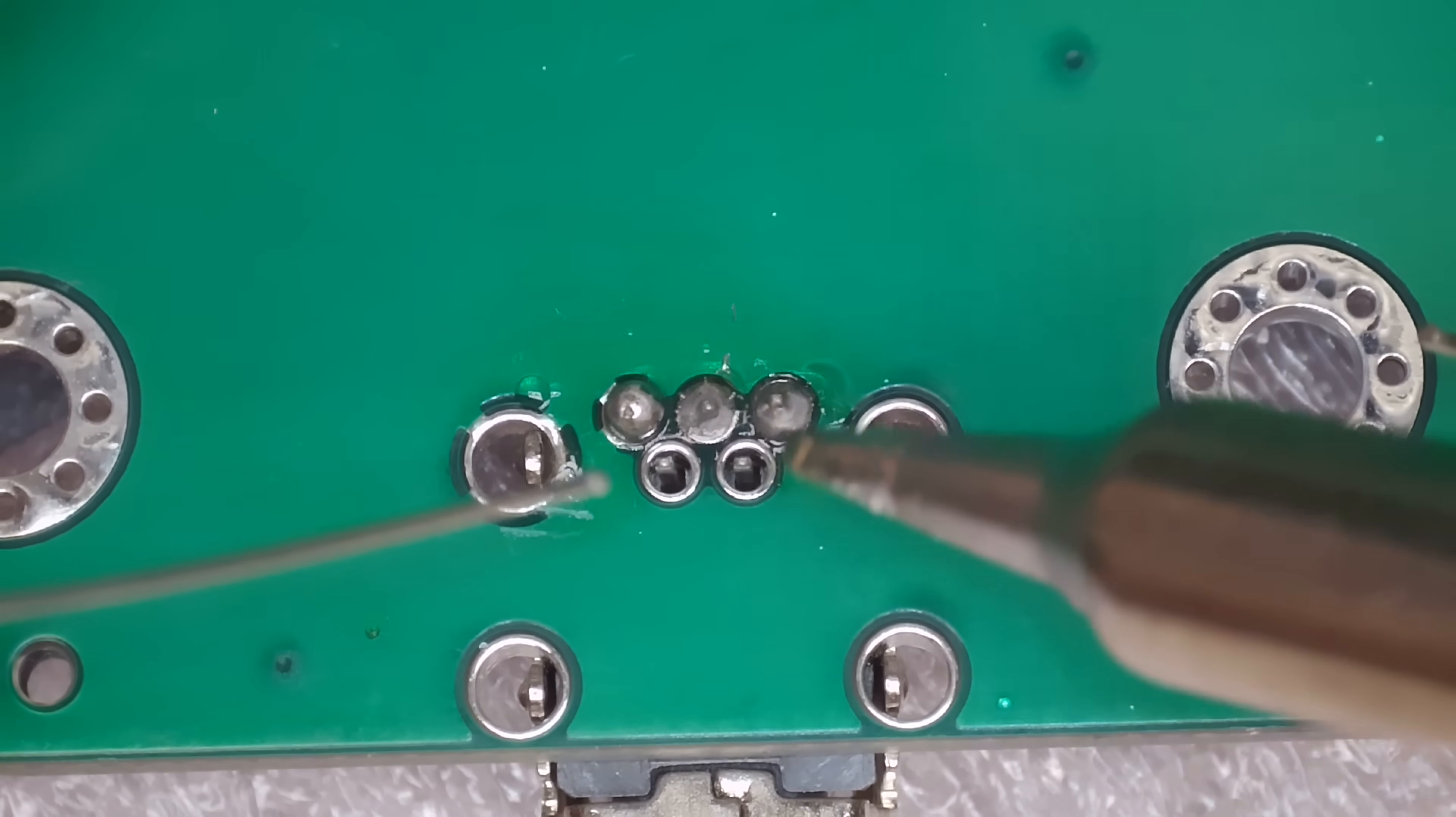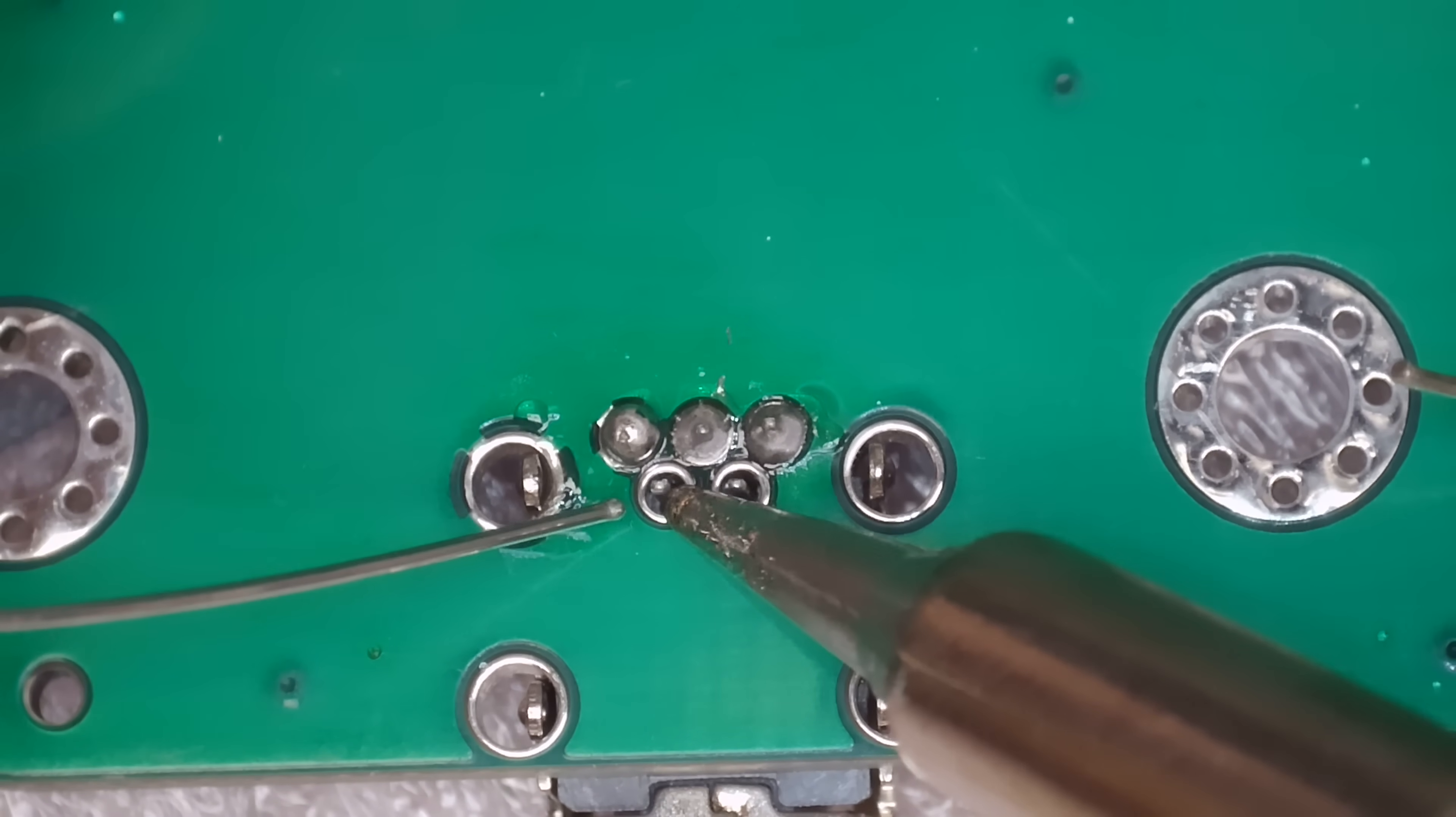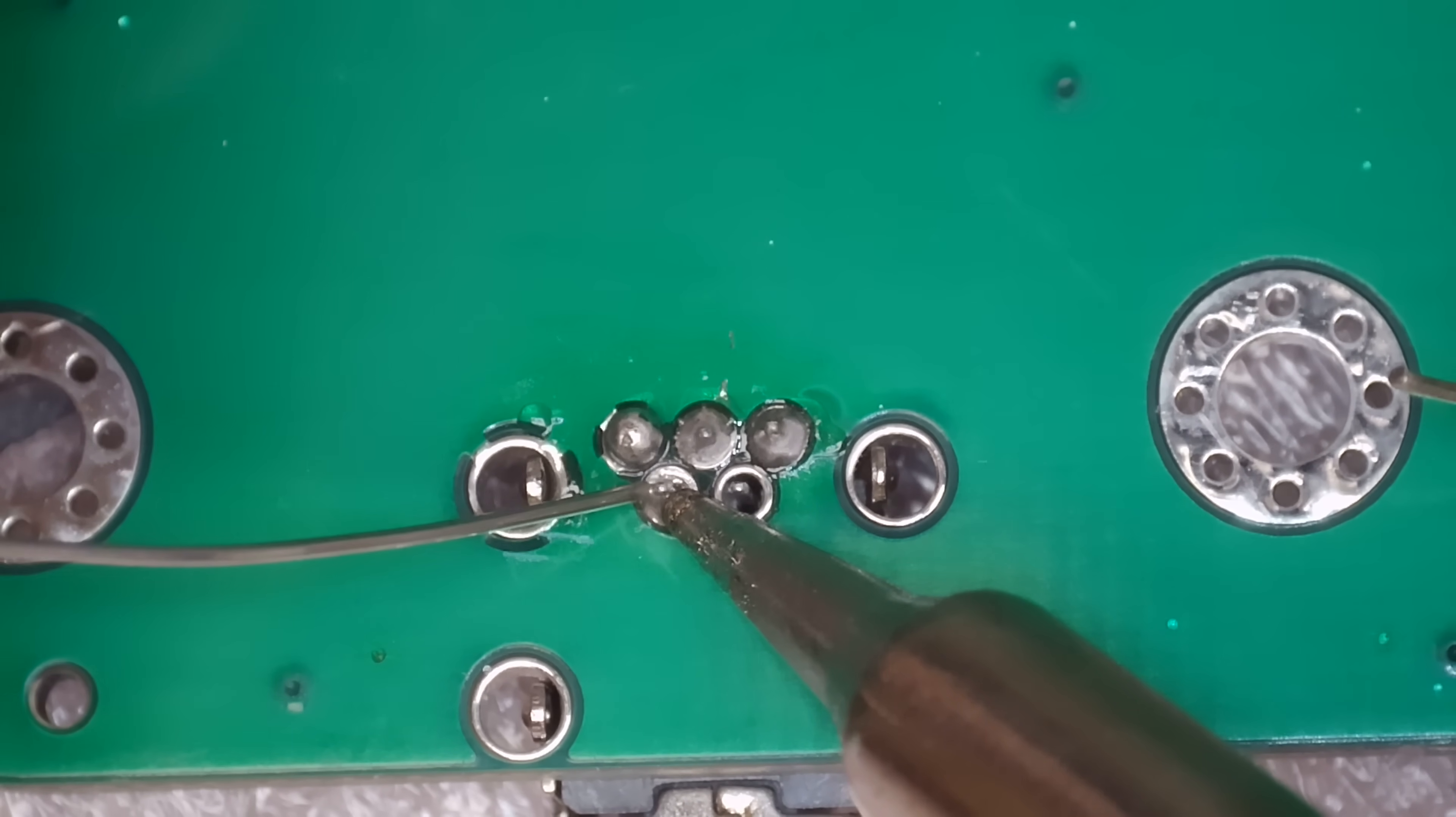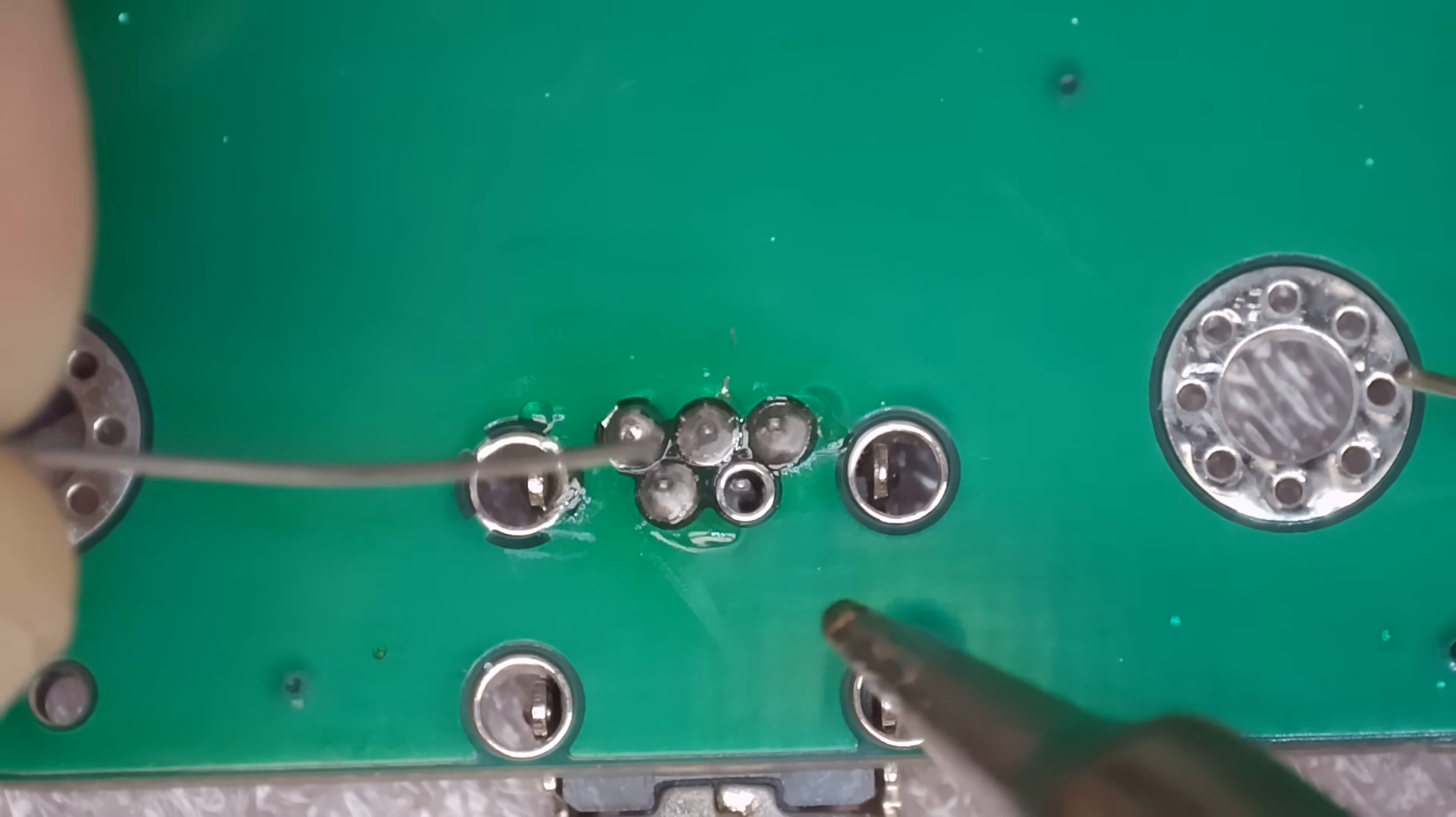For today's soldering I went with the F245 handle and at first I used the pointy B tip. Soldering small stuff like the data pins for the USB port, well this tip worked just fine.